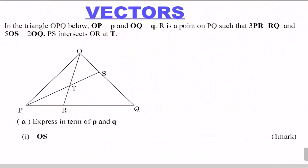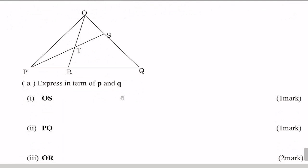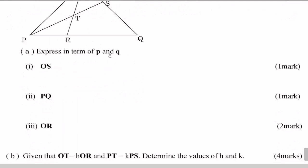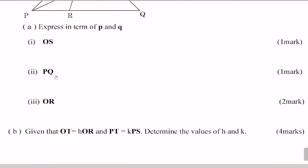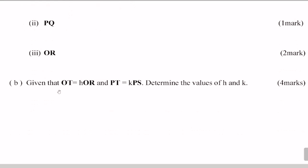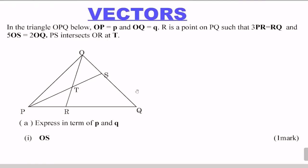A common point vectors problem. In the triangle OPQ below, OP equals p and OQ equals q. R is a point on PQ such that 3PR equals RQ and 5OS equals 2OQ. PS intersects OR at E. For part A, express in terms of p and q: OS, PQ, and OR. Then for part B, given that OT equals hOR and PT equals kPS, determine the values of h and k. That is the whole question, worth 10 marks.